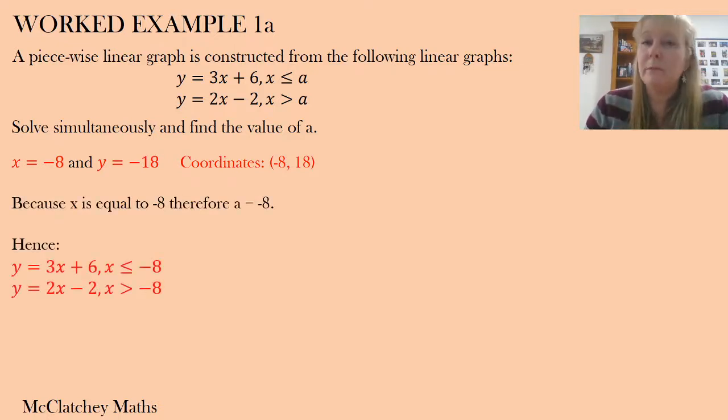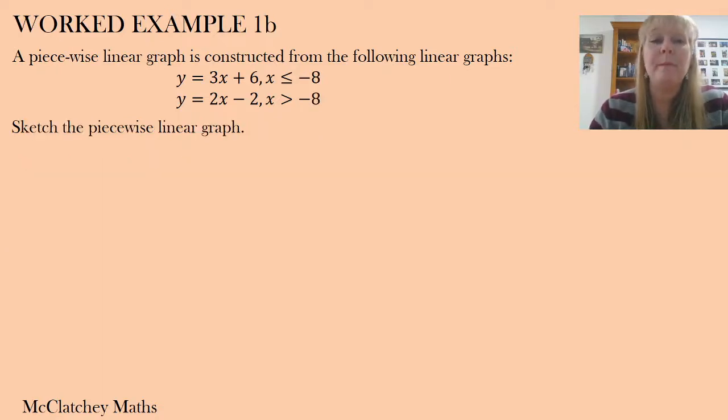And what we're going to do from here is we are going to graph the line. Now, I realise that we've got a little mistake there. It should say negative 18, but the coordinates are negative 8, negative 18. And we're going to substitute where we've seen a in our original domains. We're going to use negative 8 wherever we see the letter A. So now we know what our domains are for graphing.